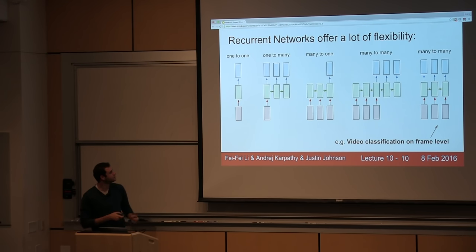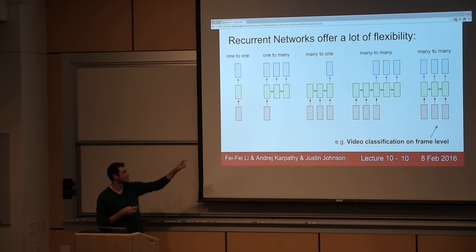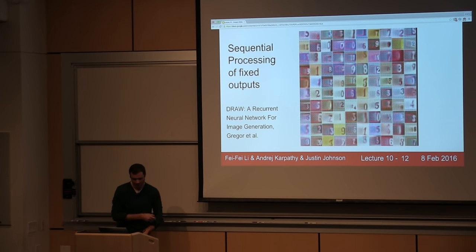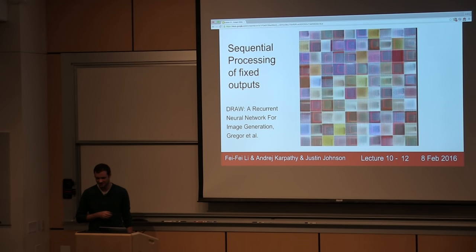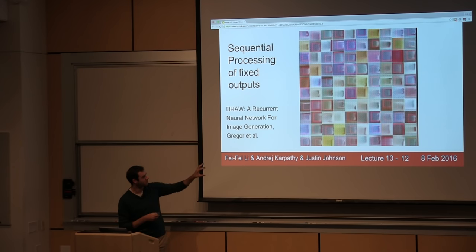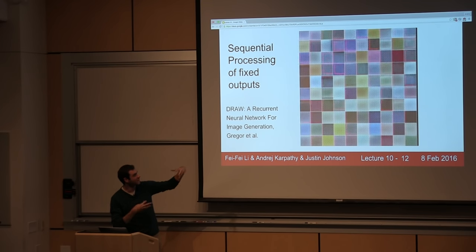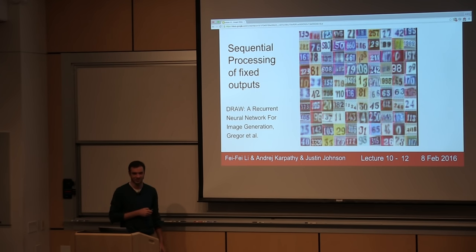A student asks about what the arrows mean in the diagrams. Yeah, every one of these arrows is a dependency — arrows just indicate functional dependence, so things are a function of things before. And those generated house numbers are not in the training data; these are made-up house numbers from the model. They look quite real, but they're actually made up from the model.